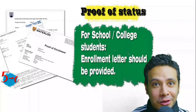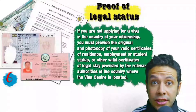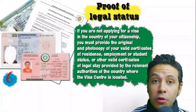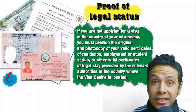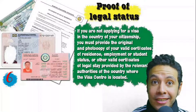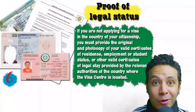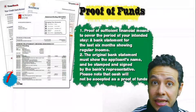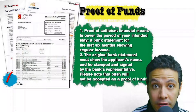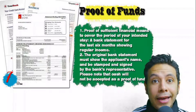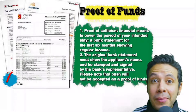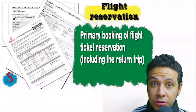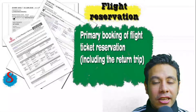If you are a student, an enrollment letter from your university or school should be provided. If you are applying from a country different from your own, provide a certificate of legal residence or a valid residence visa for that country. You will also need a bank statement showing your balance for at least six months, signed and stamped by bank representatives. Cash will not be accepted as proof of funds.